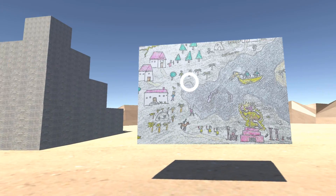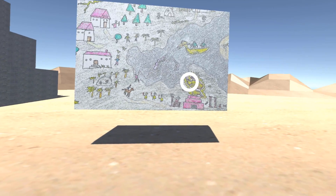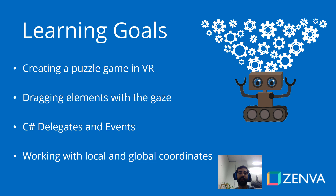Now let's have a look at the main learning goals of this course. You'll learn to create that amazing puzzle game in virtual reality from absolute scratch. We'll be developing a component that allows us to drag objects in virtual reality and that can be dropped into any Unity project, and you'll be building that from scratch. Also in this course we'll be covering some intermediate to advanced C# concepts such as delegates and events, and we'll be making extensive use of events in this particular game, all covered from the ground up.